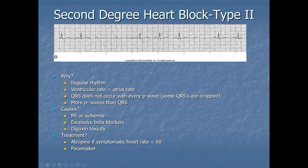Second degree heart block type 2 — Mobitz 2: the rhythm is regular. Ventricular rate is less than atrial rate. QRS does not occur with every P wave — some QRSs are dropped, more P waves than QRS complexes. The difference from type 1 is there's no gradual prolongation — the QRS is just suddenly dropped without preceding elongation. Causes: MI, excessive beta blockers, and digitoxicity. Treatment: atropine if symptomatic and pacemaker. Treatments are similar between first and second degree, but the manifestations differ.